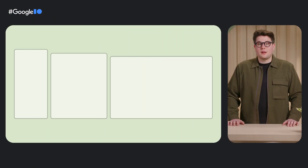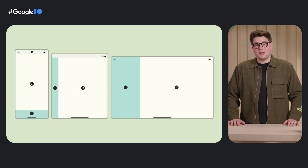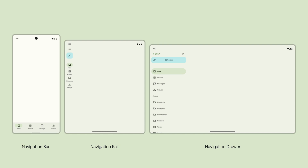Thanks, Anna. Hey everyone, I'm Ryan. I'm a design lead on Material. Anna introduced you to our three window classes. Now let's start by breaking down the anatomy of the screen. There are two key parts to consider in setting up an adaptive layout: navigation and body regions. The navigation region holds your primary navigation components.